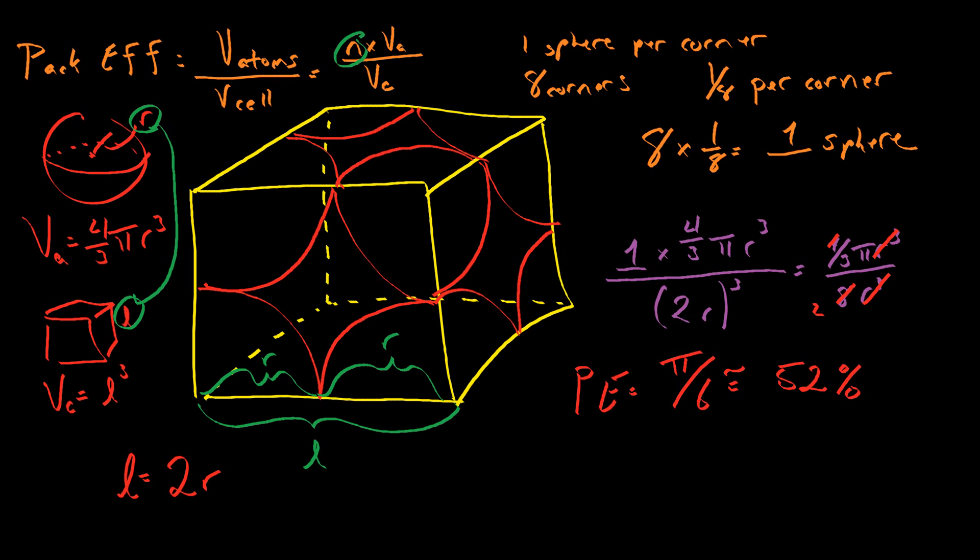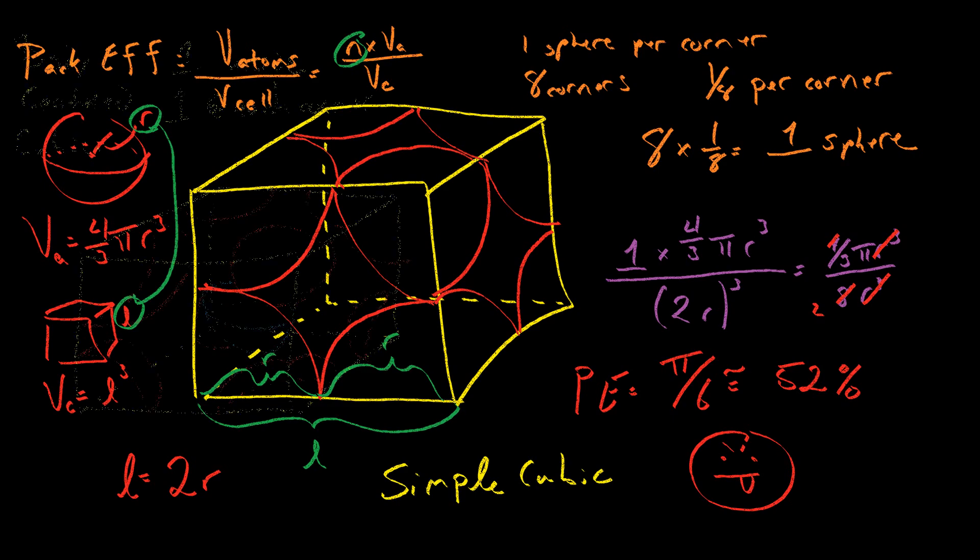That is horrible. A simple cubic structure is almost as much empty space as it is stuff. 52%, it's not all that much. A lot of things are packed more tightly than that. So let us look at something that is slightly more efficient, namely body-centered cubic.